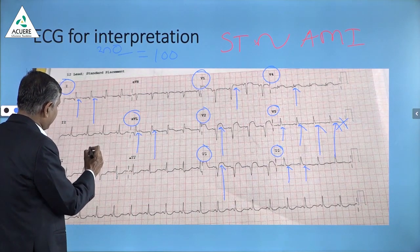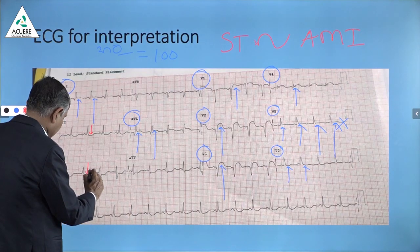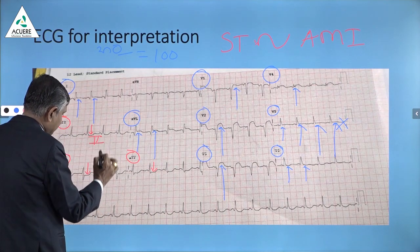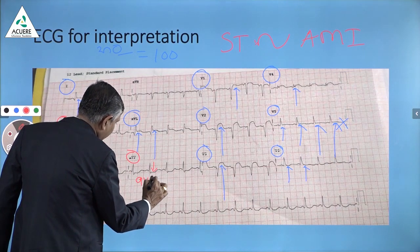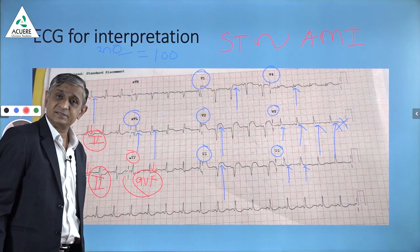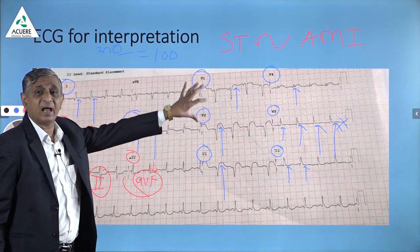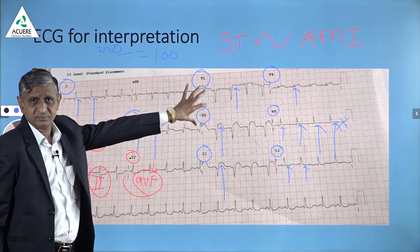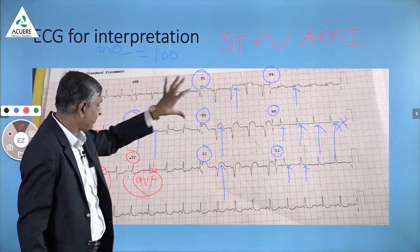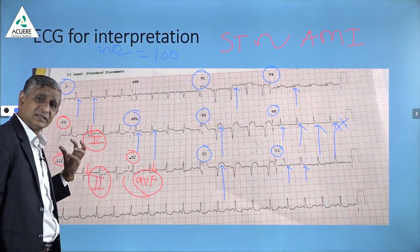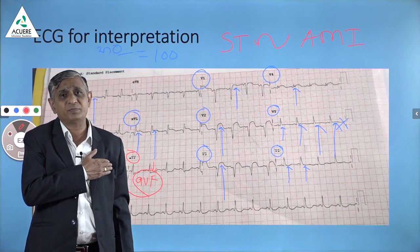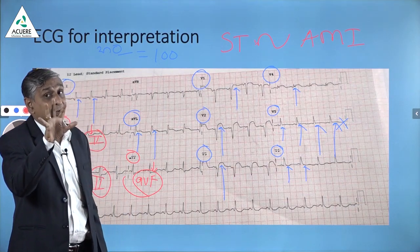In this ECG, ST depression is seen in lead 2, lead 3, and AVF — these are the inferior leads. So in the anterior leads and the upper lateral leads you are getting ST elevation, and in the inferior leads you are getting ST depression. This ST elevation accompanied by ST depression confirms this ECG as acute myocardial infarction covering the anterior and upper lateral portion of the heart. This may be an evolving ECG.